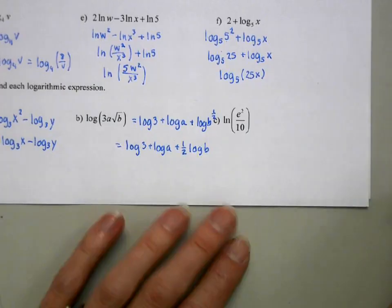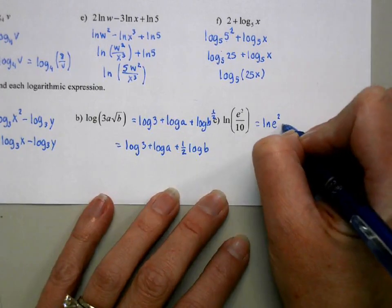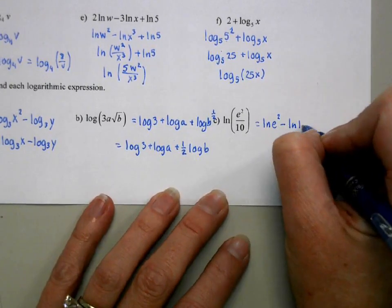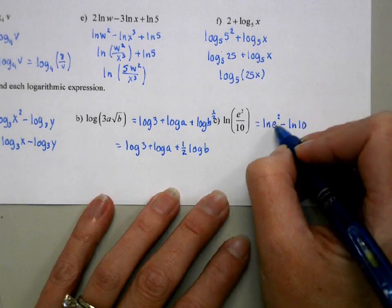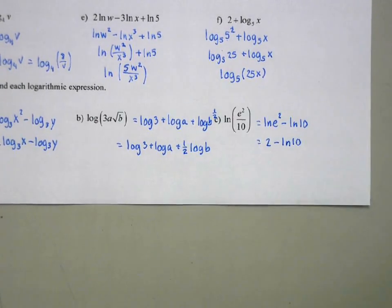Last one. This will be natural log e squared minus natural log of 10. And then natural log of e squared simplifies to 2 using the inverse relationship. So we get 2 minus natural log of 10.